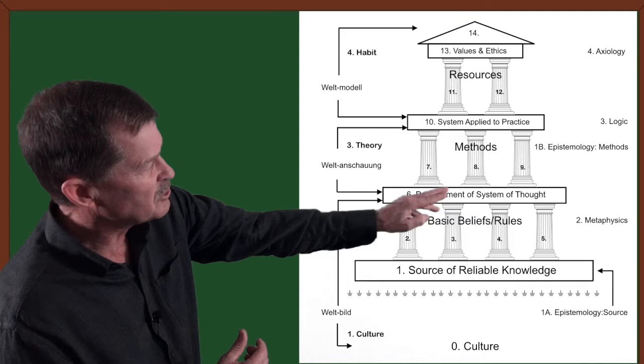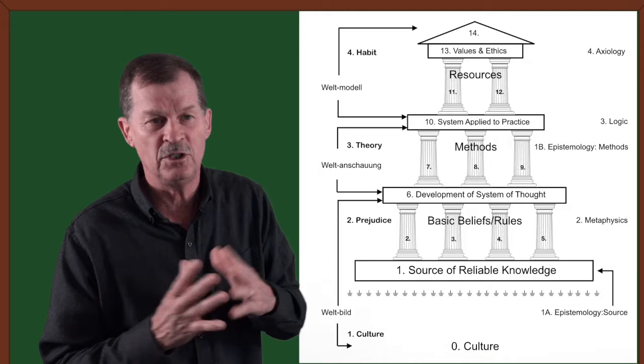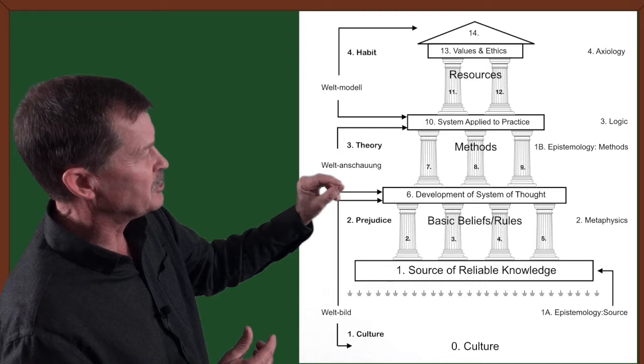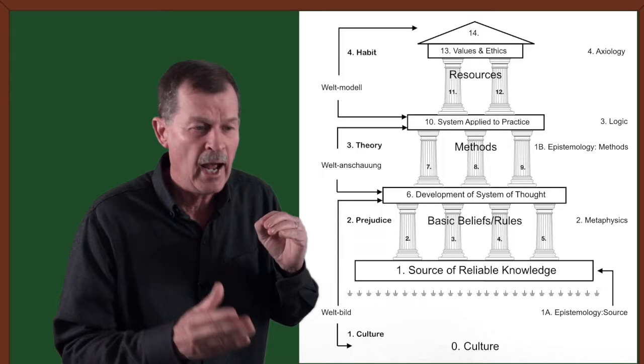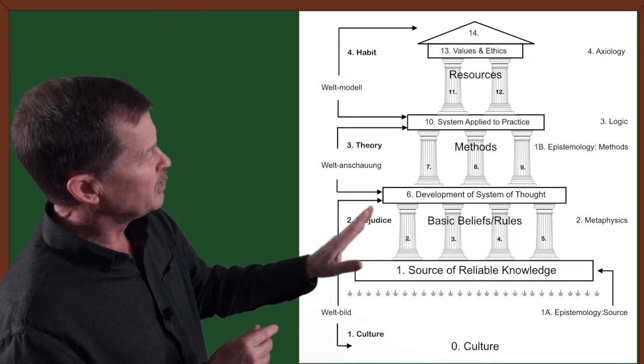Now corresponding all this to philosophy, we see on the other side, down at the base level, we have Epistemology 1A. Epistemology is one of the four branches of philosophy. Philosophy has four branches: Epistemology, Metaphysics, Logic, and Axiology. We are going to go through all four of those branches in this series to show how I have put together my own personal philosophy.